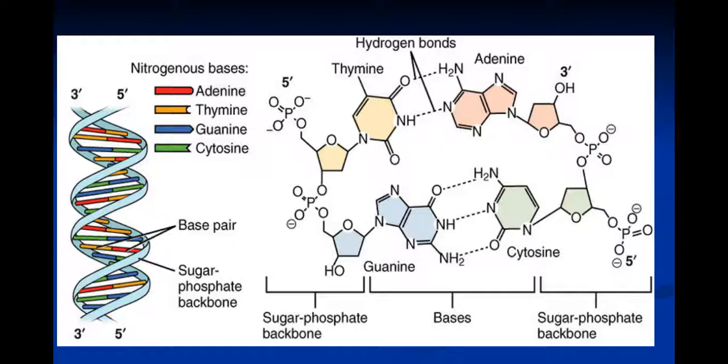So we're always going to have a purine is going to be hydrogen bonded to a pyrimidine in this sense. So guanine and cytosine must match up for this reason, just like thymine and adenine must match up for this reason.